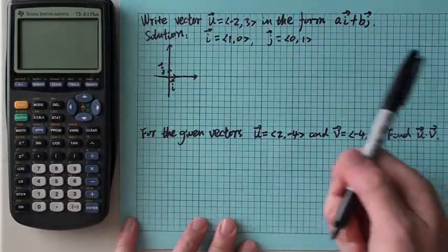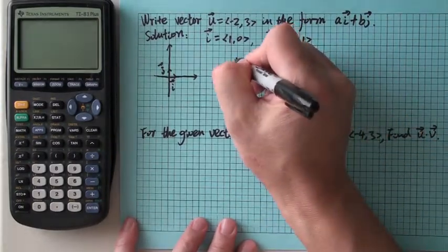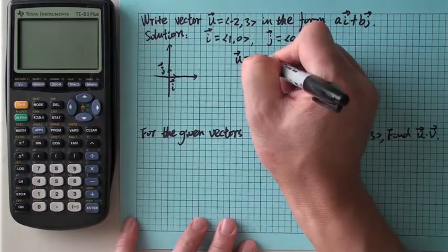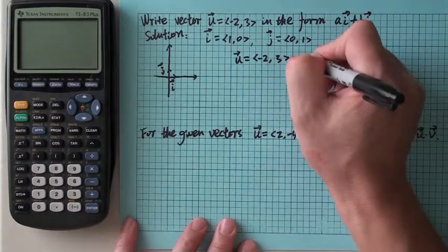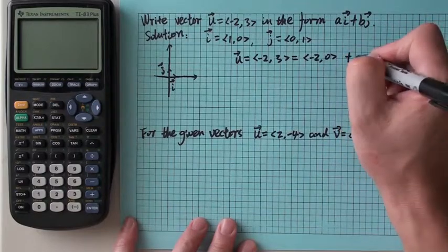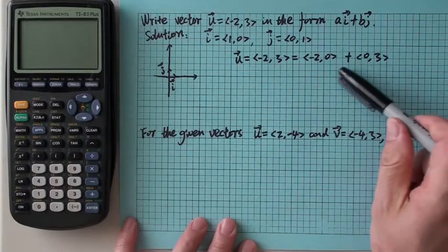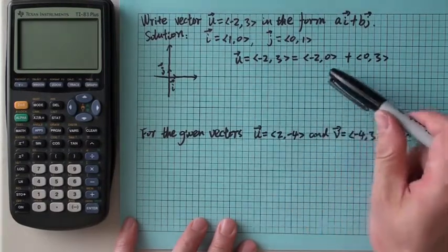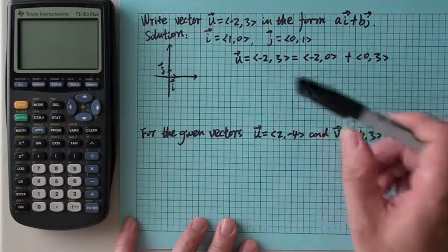Alright, so you need to get A and B, then you are done. Now what? U is ⟨-2, 3⟩. So you may agree that's ⟨-2, 0⟩ plus ⟨0, 3⟩, because 0 plus -2 is -2, and then 0 plus 3 is positive 3.